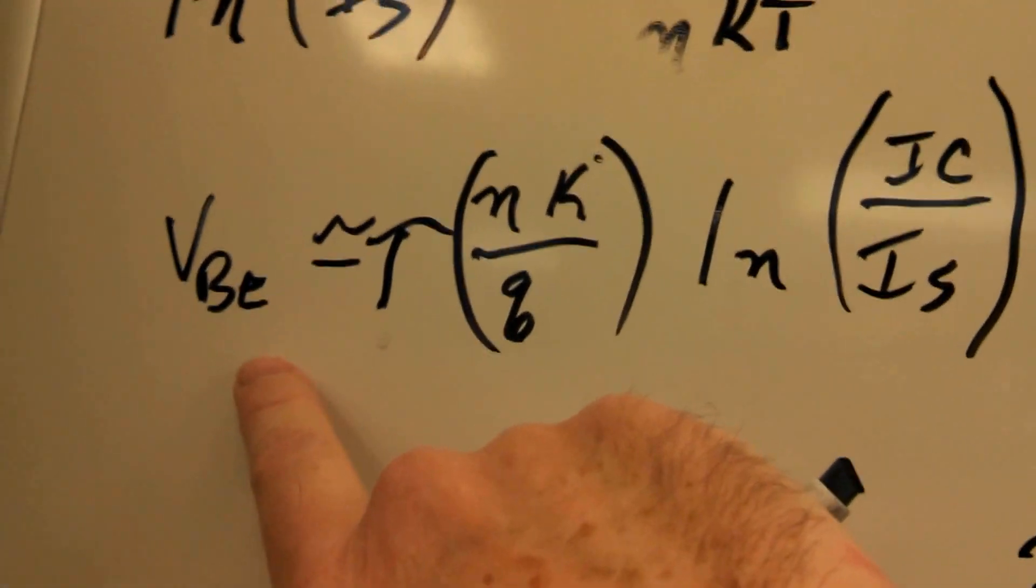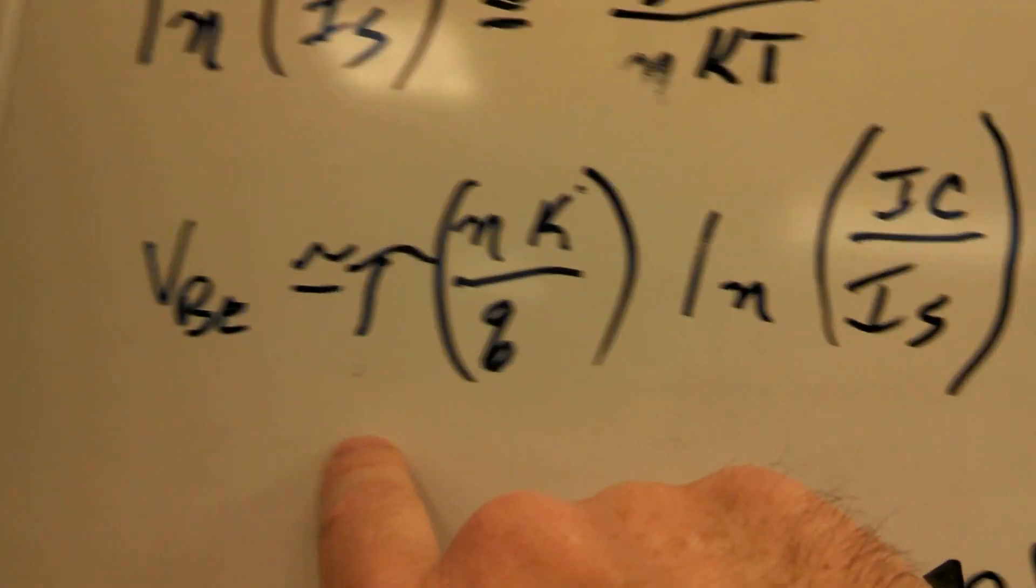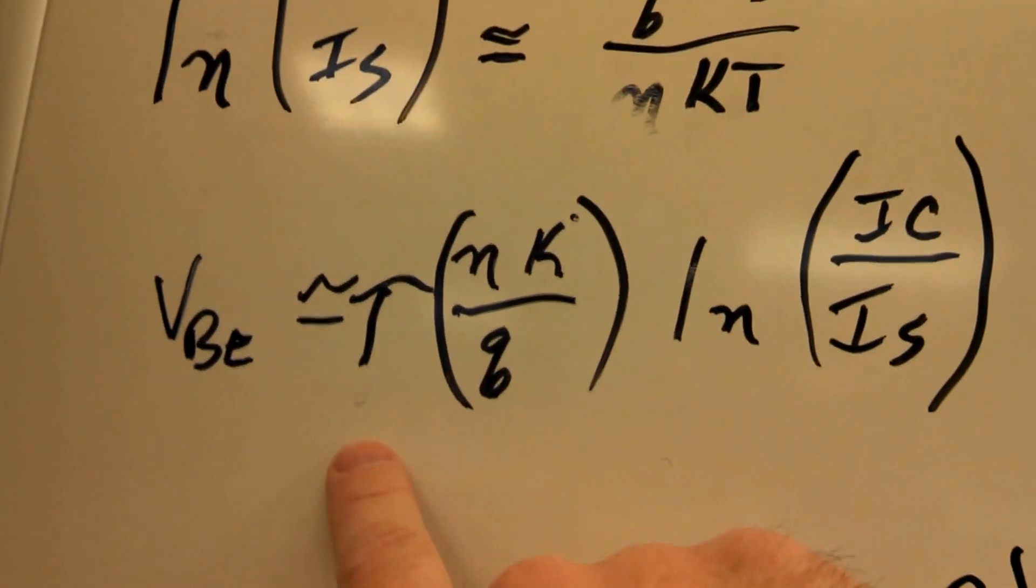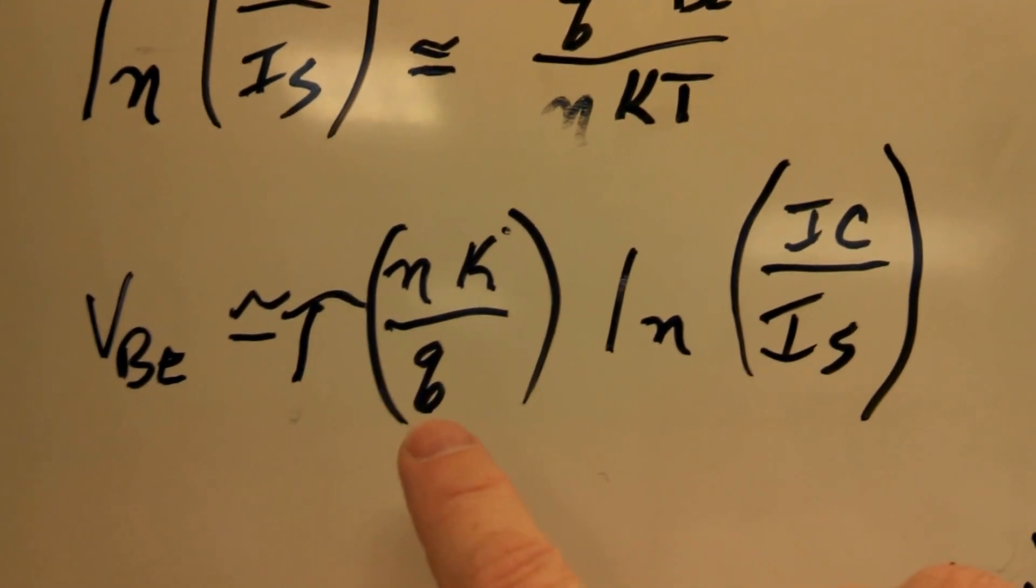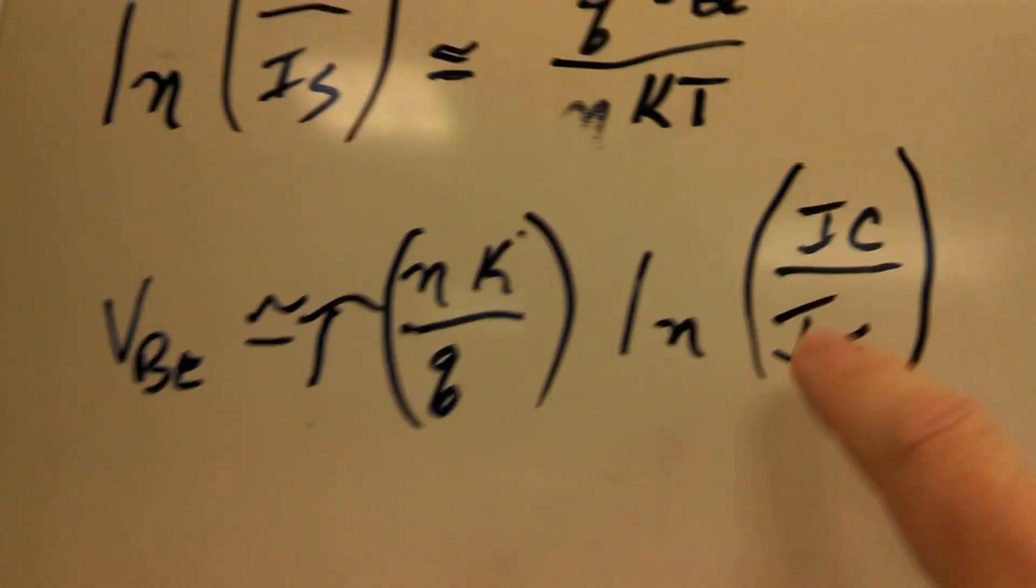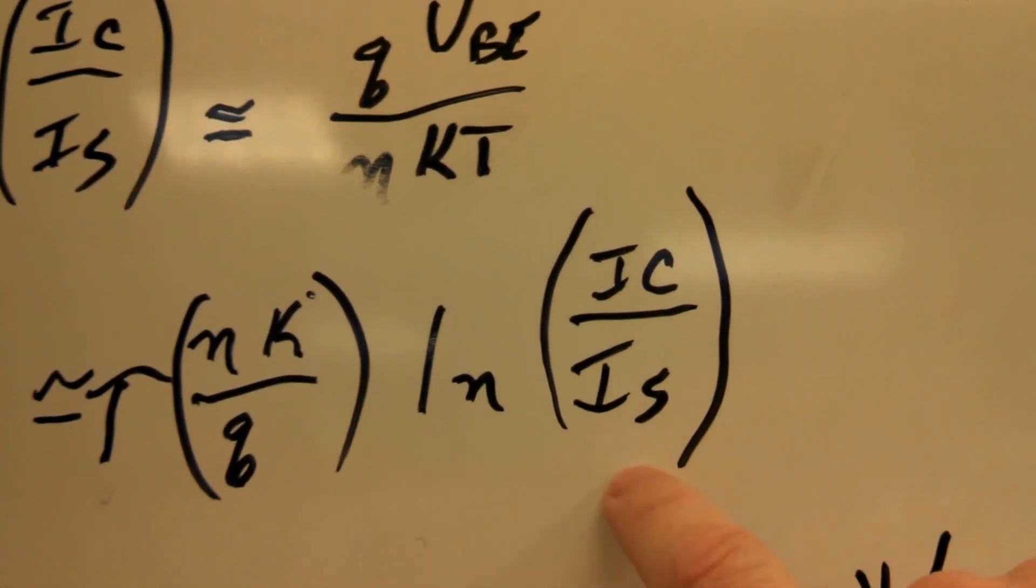So you look at this, and the first thing you say is, oh well, if T goes up, then VBE goes up. And that's not true. So IS dominates this curve.